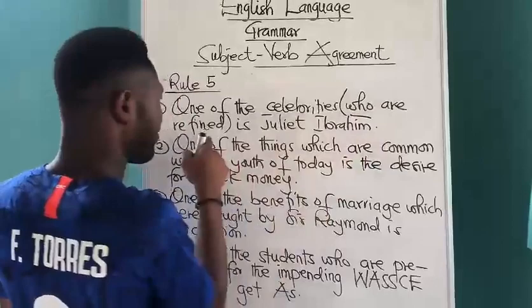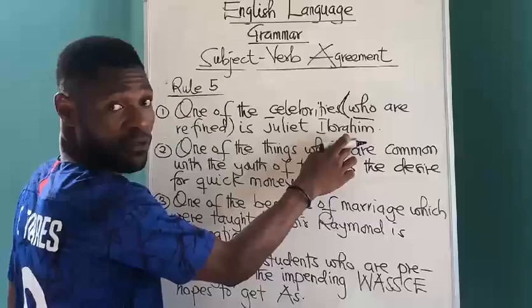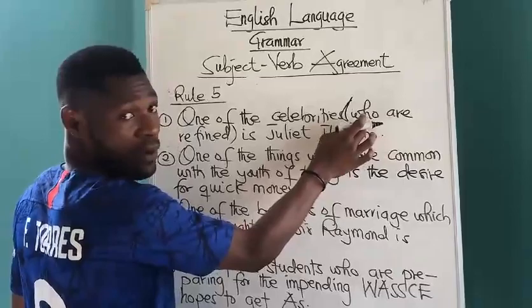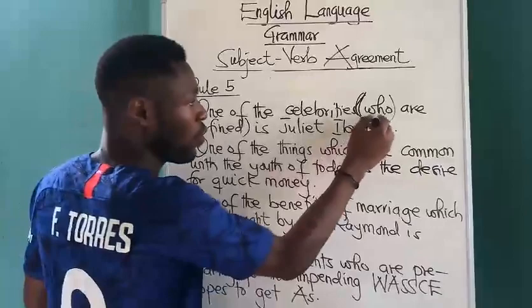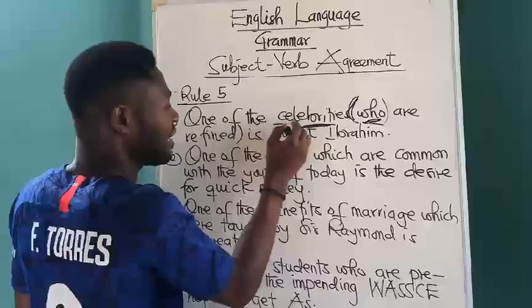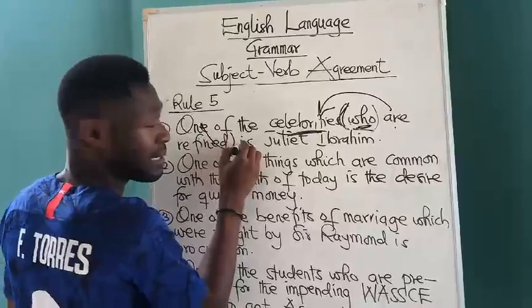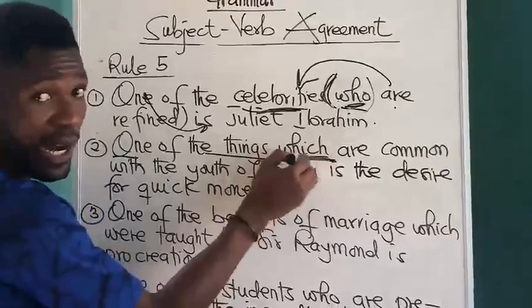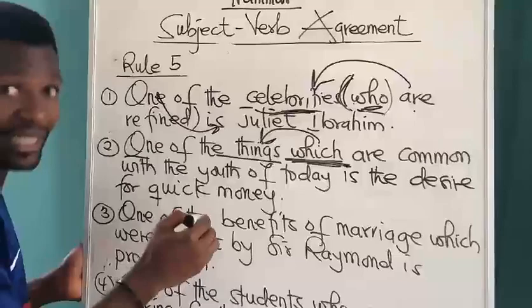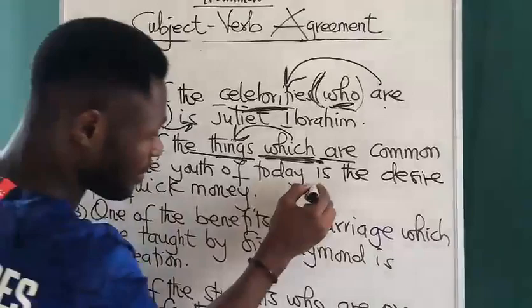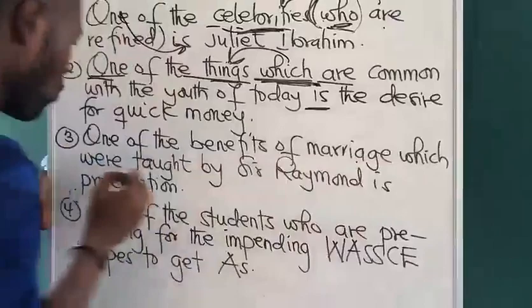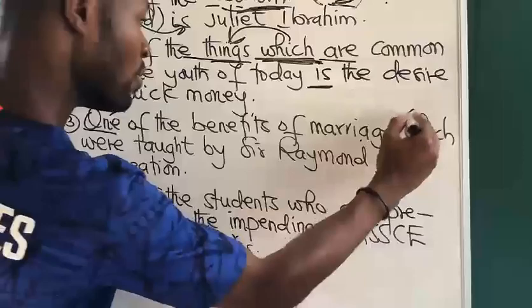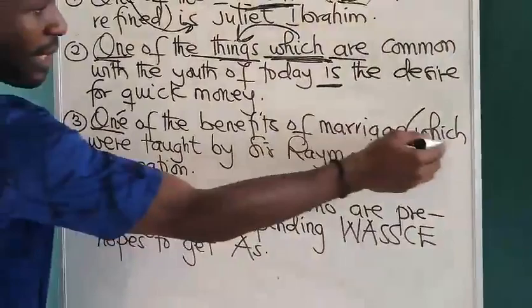'One of the celebrities who are refined.' Instead of saying 'one of the celebrities is Juliette Ibrahim' as in Rule 4, this time we've included a relative clause introduced by a relative pronoun — 'who are refined.' The antecedent of 'who' is referring to 'celebrities', so 'who are' agrees with 'celebrities', while 'one' agrees with 'is'. When you come to 'one of the things which' — this relative pronoun 'which' has 'things' as its antecedent. Therefore 'things' agrees with 'were', while 'one' agrees with the singular verb 'is'. 'One of the benefits of marriage which were taught' — 'which' refers to 'benefits', which is plural.